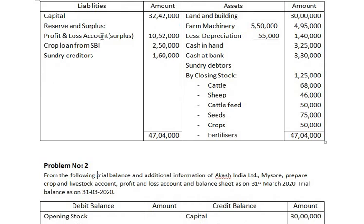In the balance sheet: on the liability side, capital, reserves and surplus (that is the profit and loss account surplus value), crop loan from SBI, and sundry creditors are recorded. On the asset side, land and building, farm machinery less depreciation, cash in hand, cash at bank, sundry debtors, and closing stock are recorded. The balance sheet is tallied.